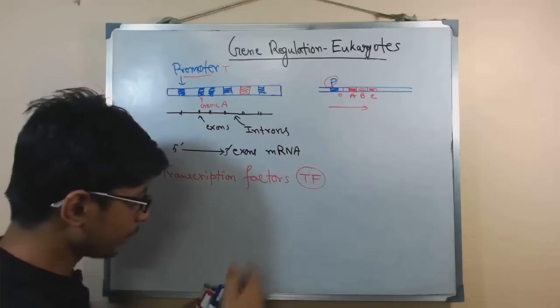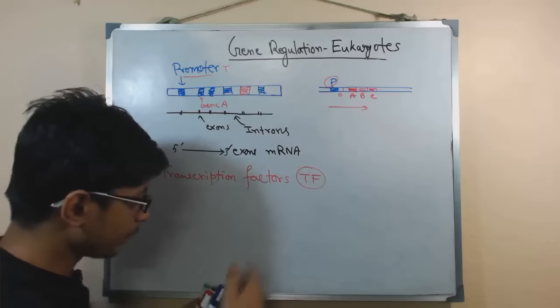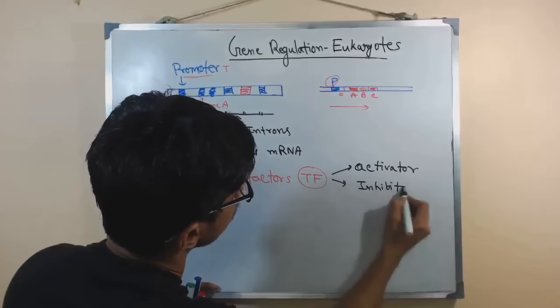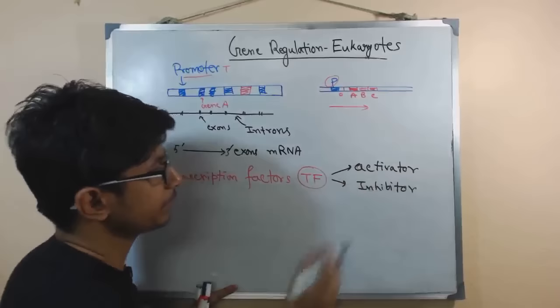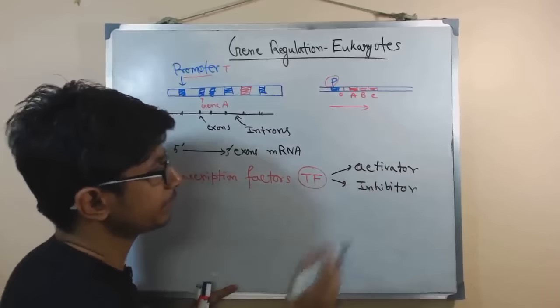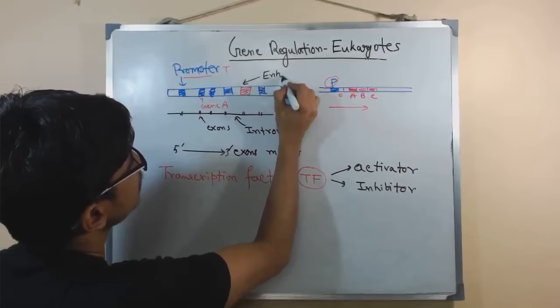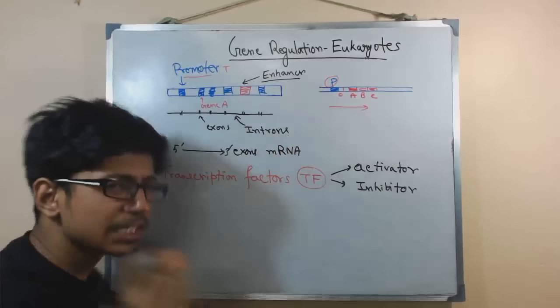Transcription factors are actually protein factors. They can be of two different types: they can be activators or they can be inhibitors, and they can function as both depending upon the situation. There are sections downstream or upstream of the desired gene — drawn here in red — and these are called either enhancer or inhibitor sequences.